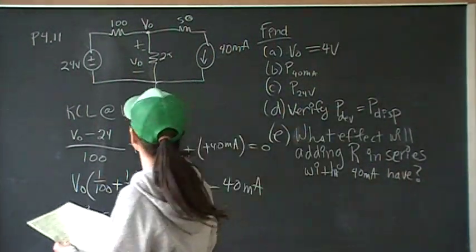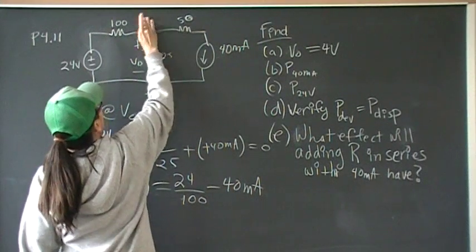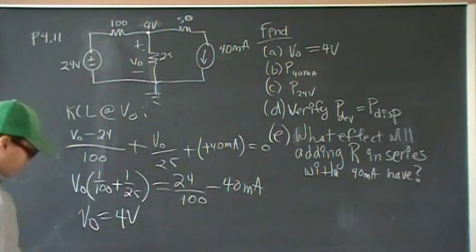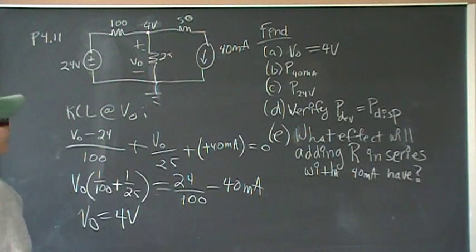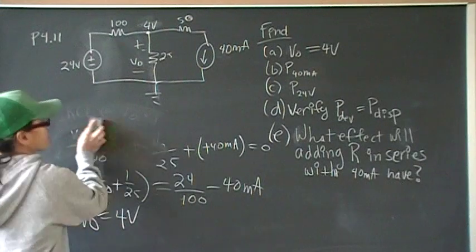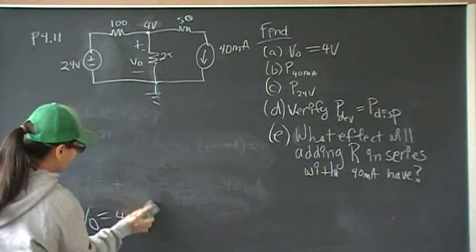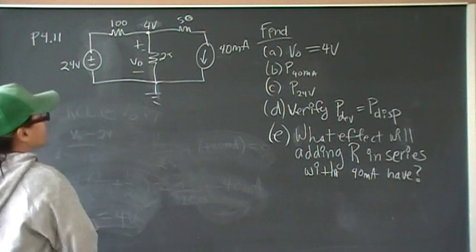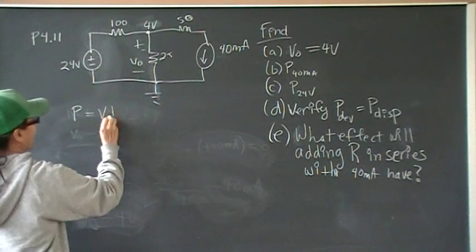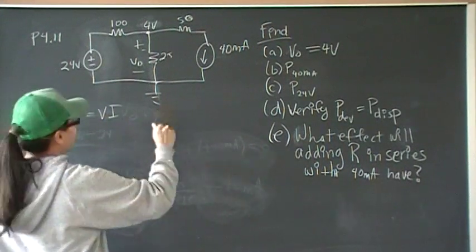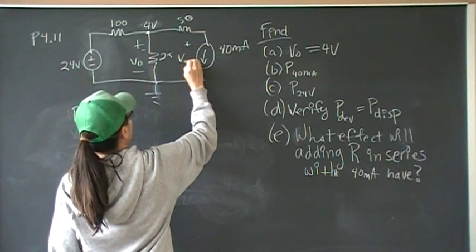So now we know this is 4 volts. And for part B, we want to find the power of the voltage drop across the 40 milliamps current source. We know that P is equal to VI. I is easy, I is 40 milliamps, but we need to know what is this V, V 40 milliamps.